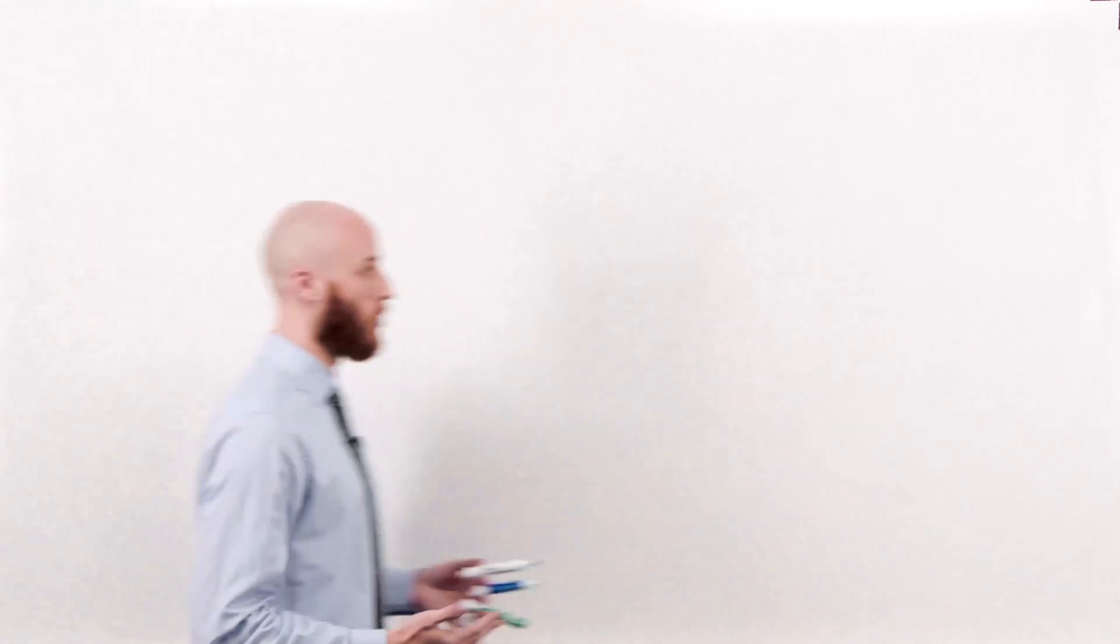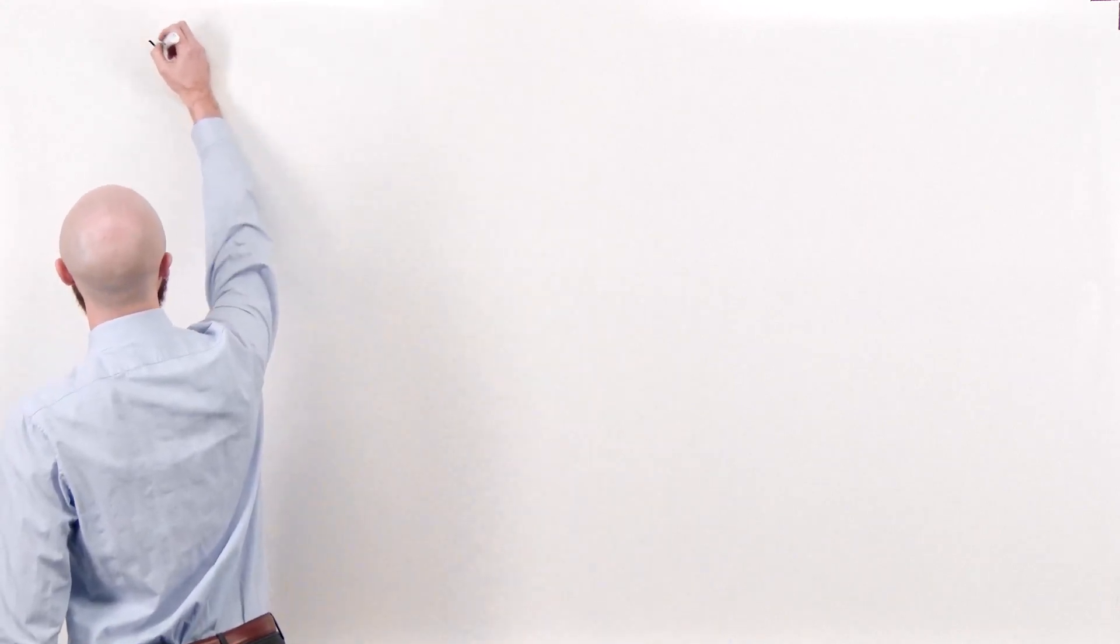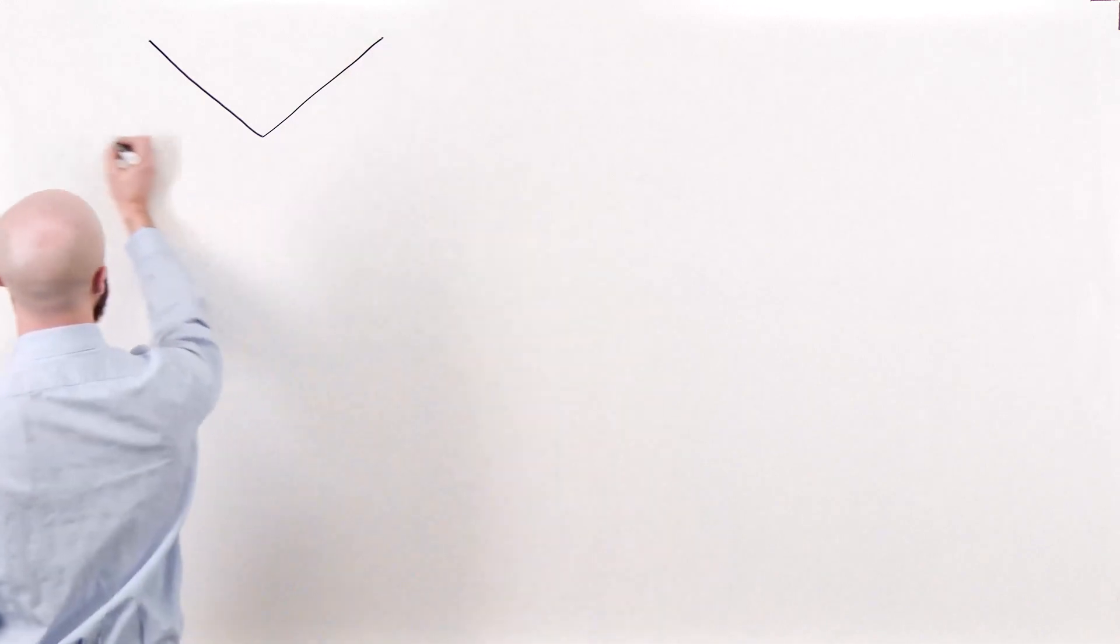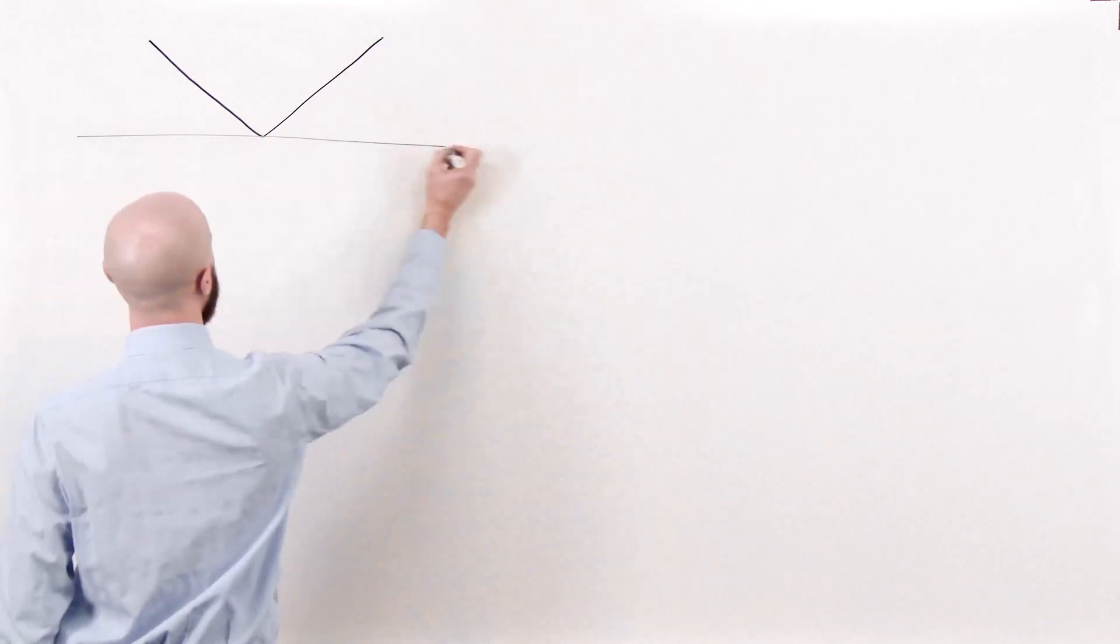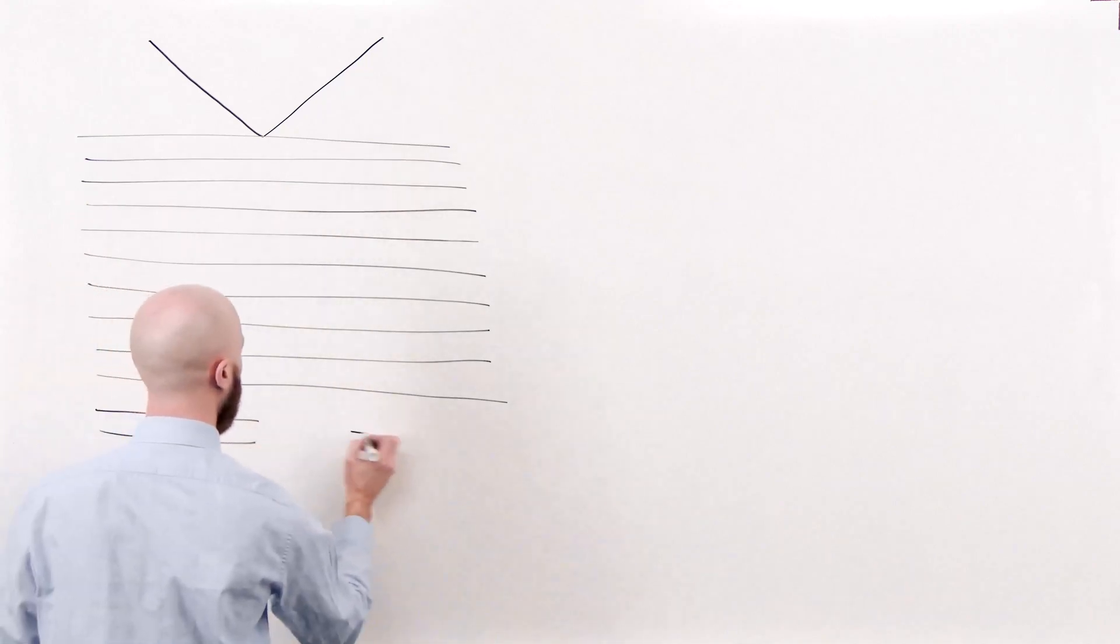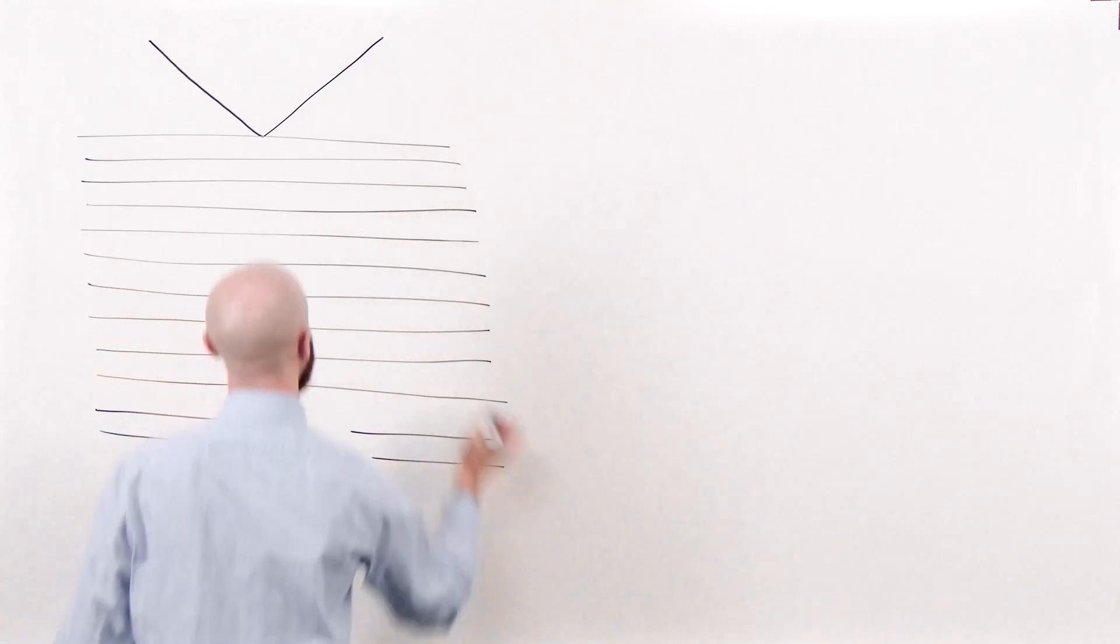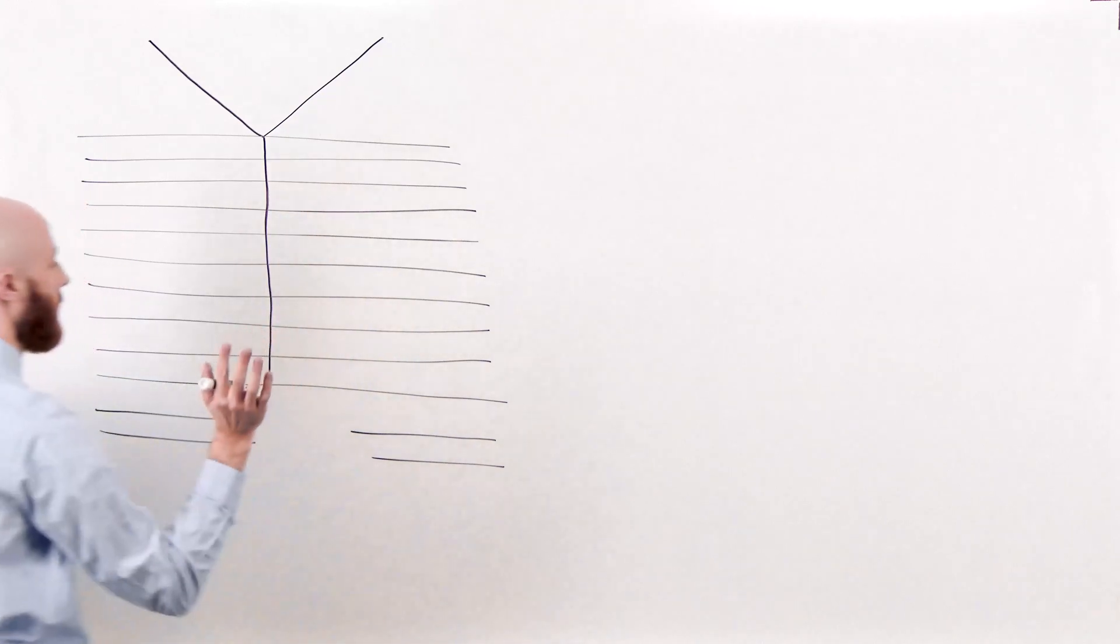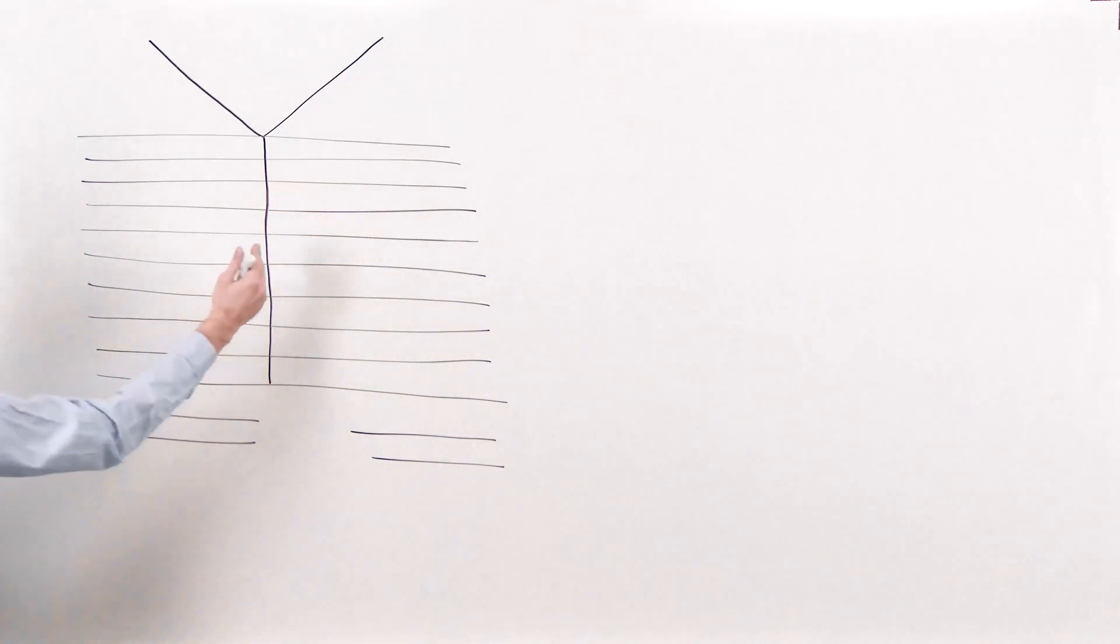So to start out with, we're going to draw out how I like to memorize the anterior Chapman's points locations. So first, we're going to start with some clavicles. Then we're going to draw out 12 ribs. We're going to draw the sternum down the middle. And this is going to represent an anterior view of the sternum, the ribs, and the clavicles. Next, we're going to number these ribs.